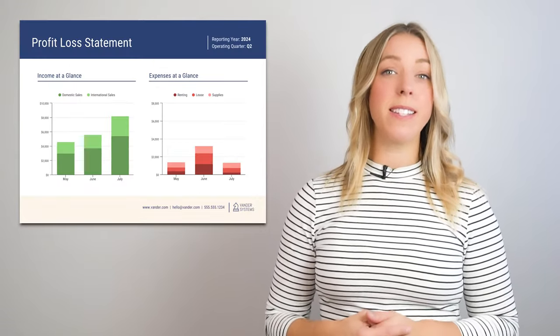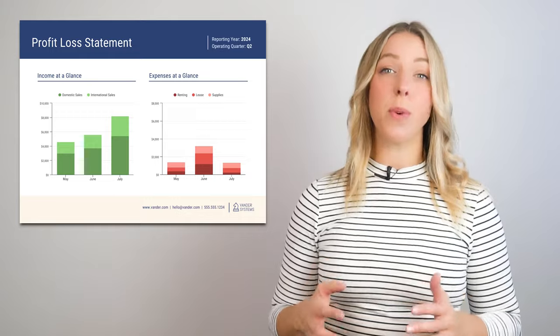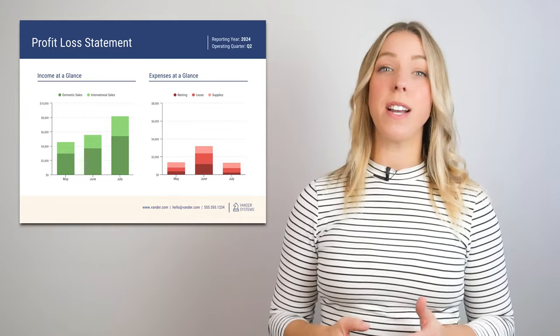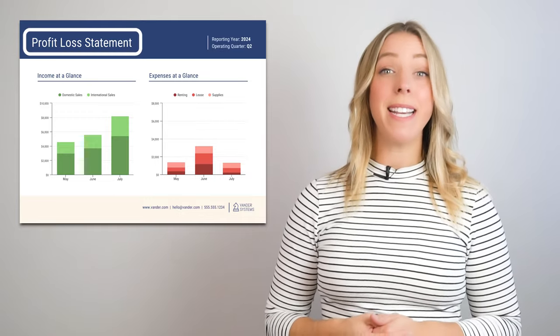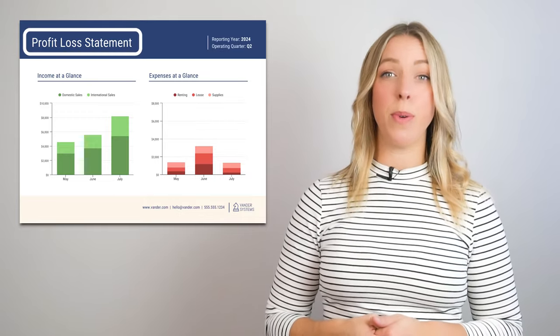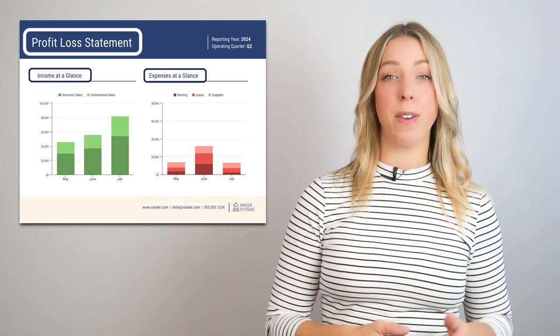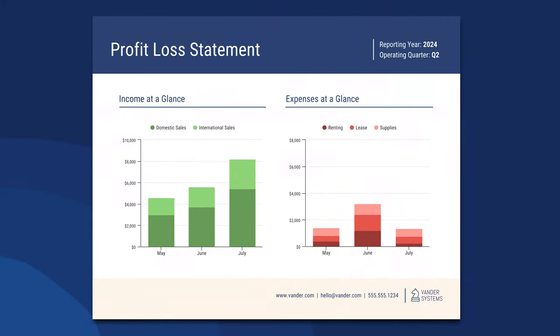Let's assume we have a company that sells products both domestically and internationally, and we want to visualize their income and expenses for a given period. This stacked bar chart provides a visual representation of the profit and loss statement, making it easy to see the relationship between income and expenses. It helps in quickly assessing the company's financial performance by showing the relative contribution of different revenue sources and the distribution of expenses.